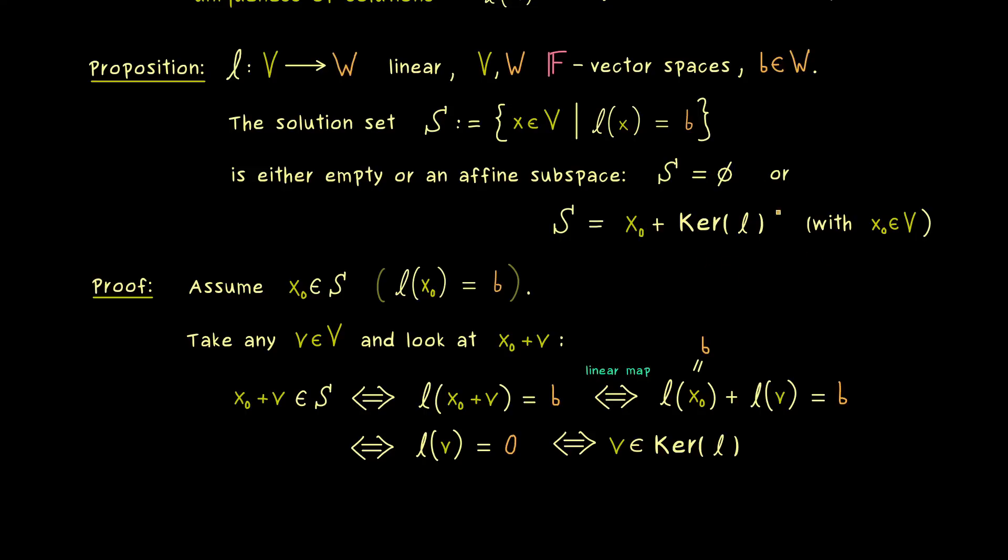Only in the case that the kernel is trivial, so given by only the zero vector, we get that we only have one solution for the solution set.